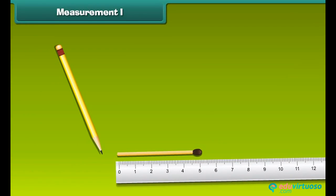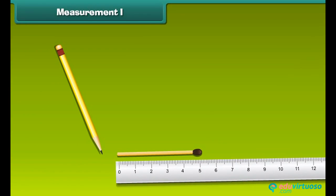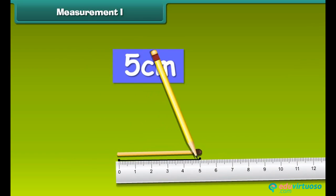Did you know how to measure the length of a matchstick with the help of a ruler? Place the matchstick near the ruler so its one end should be at zero. The number written is 5. Therefore, it is 5 centimeters long.